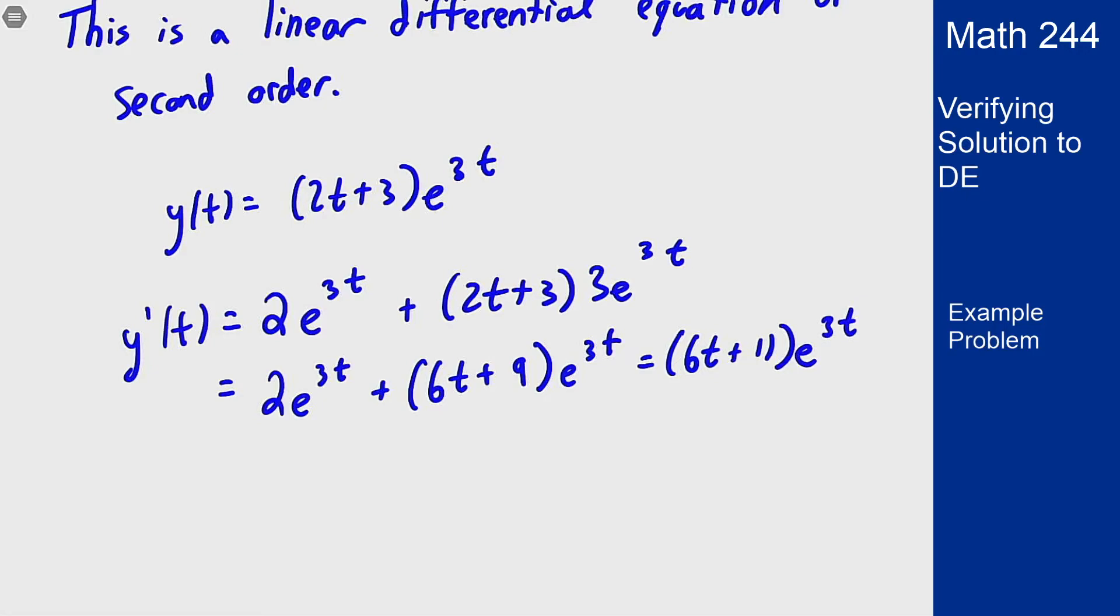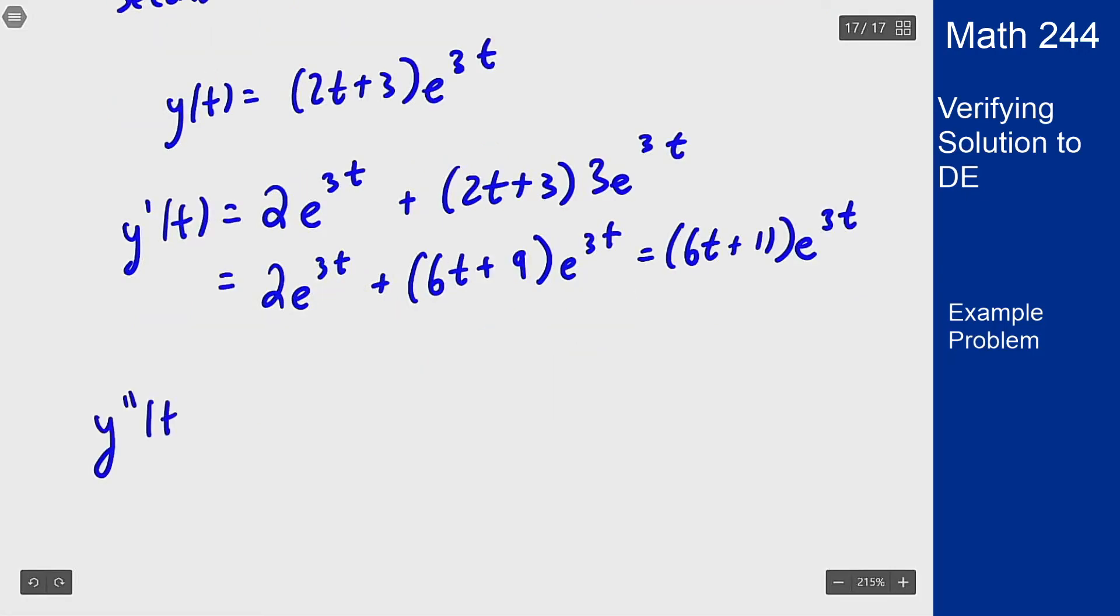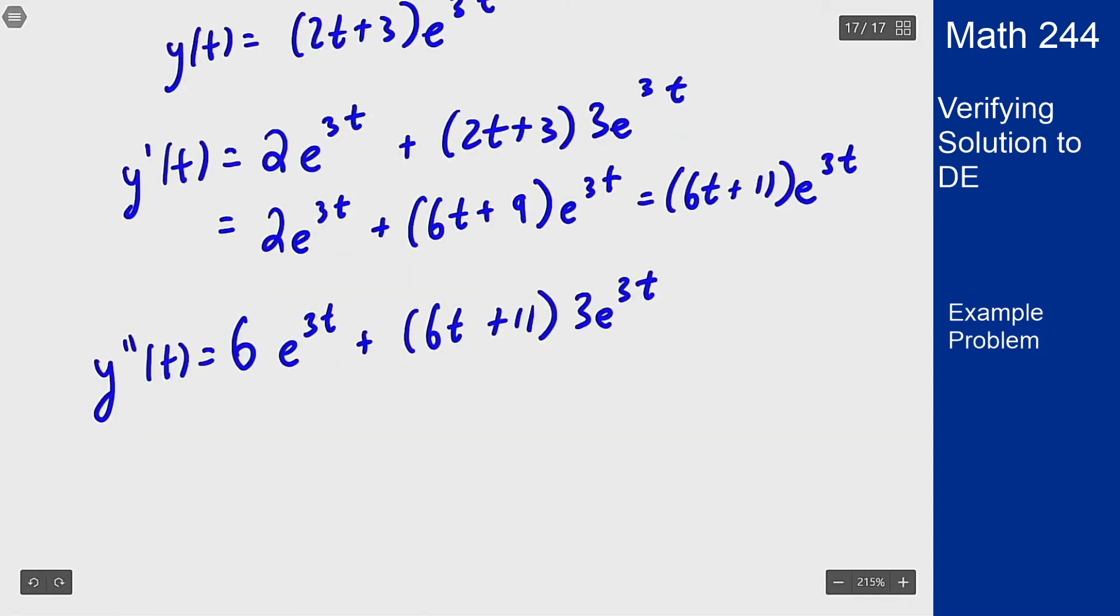We can now go to the second derivative. The y''(t) is done again by the product rule: 6e^(3t) + (6t + 11)(3e^(3t)). Putting the 3 inside: 6e^(3t) + (18t + 33)e^(3t).